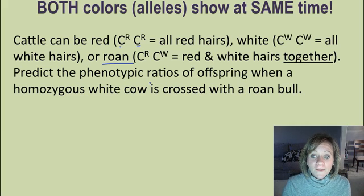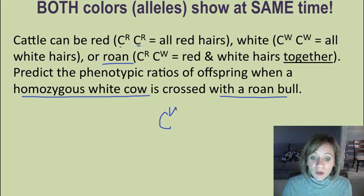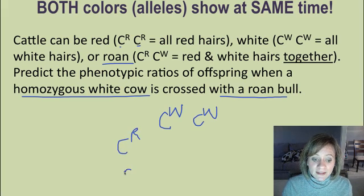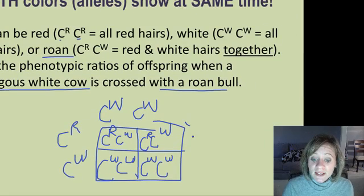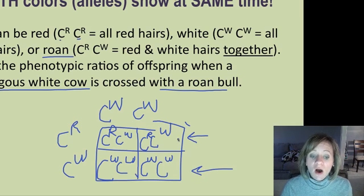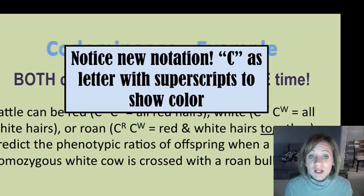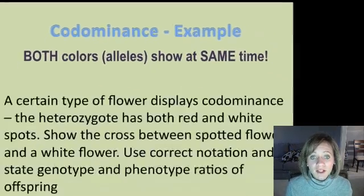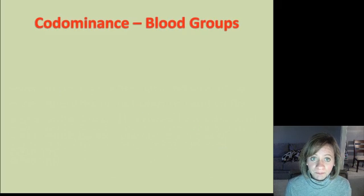Let's predict the phenotype ratios when a homozygous white cow is crossed with a roan bull. I'll put the white on top and the roan on the left, using the big C with superscripts notation. When we fill in the Punnett square, we see that half the offspring are going to be roan and half are going to be white. Just remember the big thing with codominance is this new notation — keep that in mind when you do the next example on your own with flower color, and give the genotype and phenotype ratios.